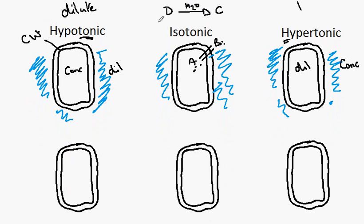The rule is water moves from the dilute to the concentrated solution. So we can see that in the hypotonic cell, water is going to enter the cell like this. The consequence of which is that there will be a volume increase in the cell.